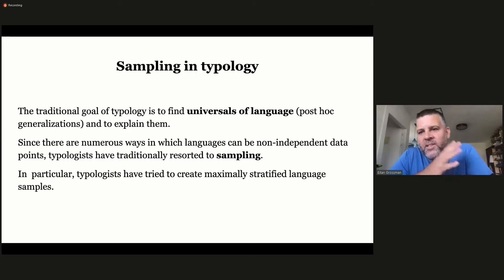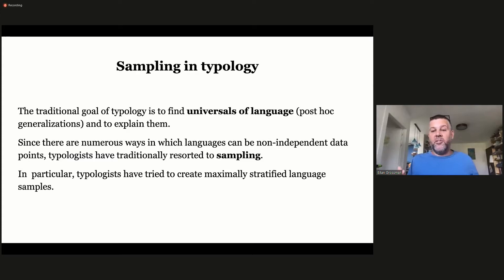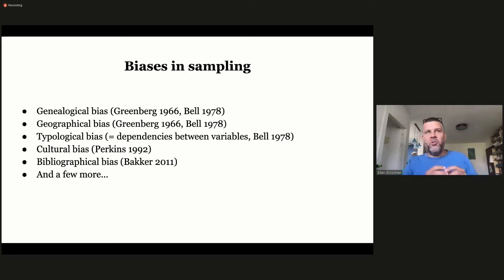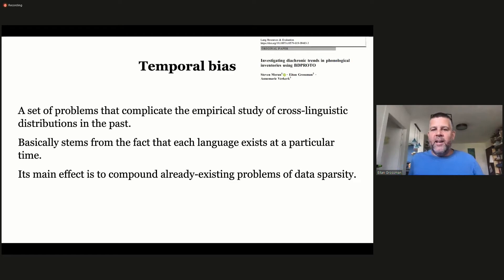I need to back up and talk about sampling in typology. The traditional goal of Greenbergian typology is to look for universals of language and explain them. Since languages can be non-independent data points, typologists have typically resorted to sampling — trying to create maximally stratified language samples. Well-known confounds include genealogical bias, geographical bias, and typological bias. We wanted to point to what we think hasn't been prominently addressed yet: something we call temporal bias.